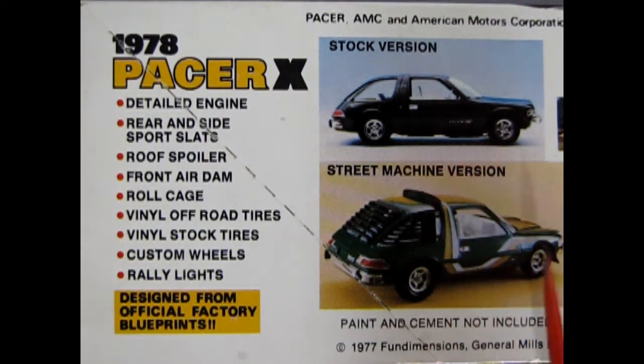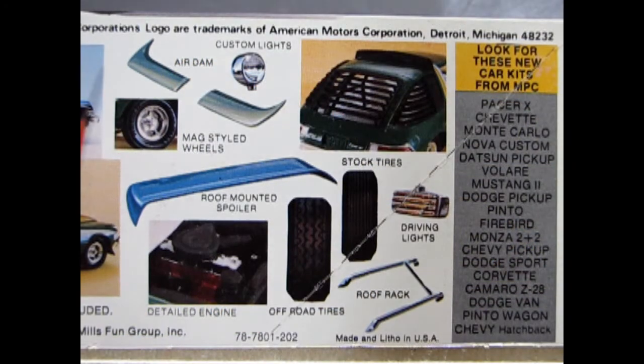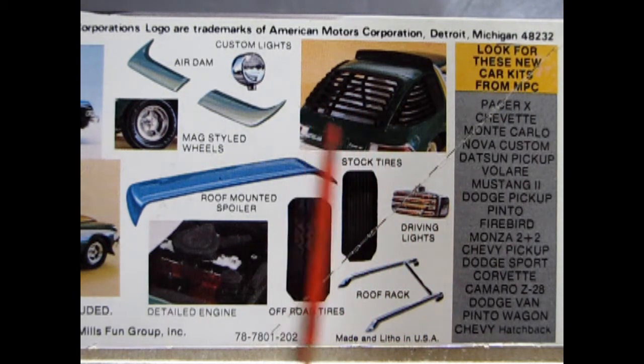Here we can see the stock version and down below is the street machine version. The model kit also includes air dams, custom lights, mag style wheels, roof mounted spoiler, detailed engine, off-road tires, roof rack, stock tires, driving lights, and these nice window slats.